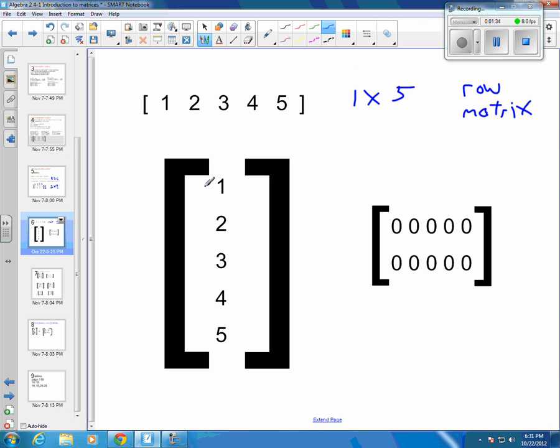This one is a 1, 2, 3, 4, 5. This is a 5 by 1. And this is called a column matrix. C-O-L-U-M-N column matrix. Oops, my pen got off there a little bit.